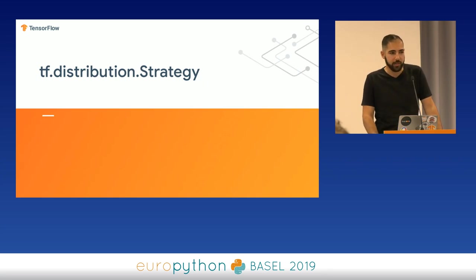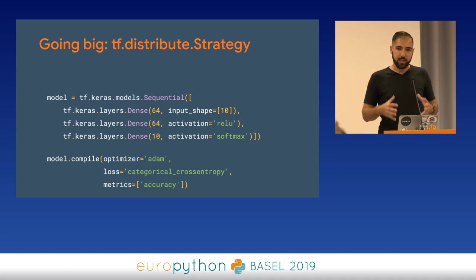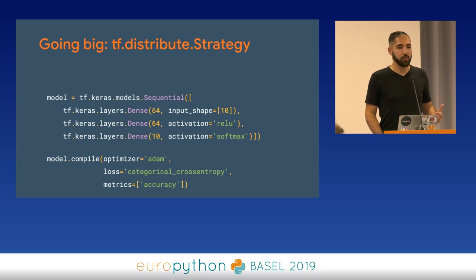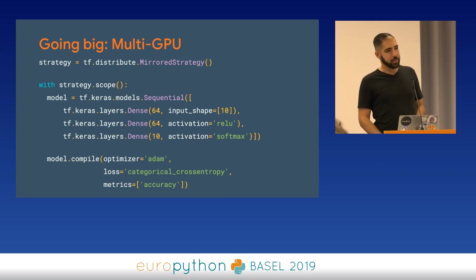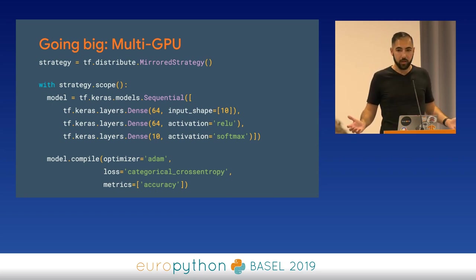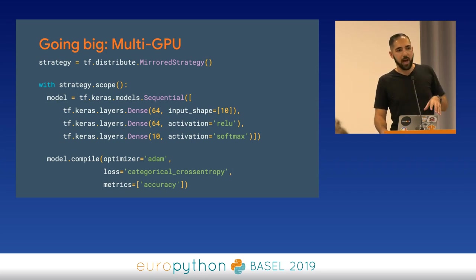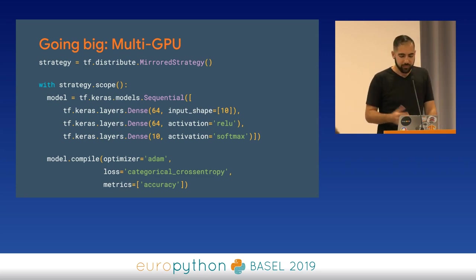Next, distribution strategies. TensorFlow is flexible and scalable across different hardware environments. If you've built a model locally and want to move it to a larger hardware cluster, all you need to do is add it within the scope of a distribution strategy. Distribution strategies let you take your code and deploy it over a hardware cluster. In this example, we're using the mirrored strategy — if you have four GPUs, it copies the same model across all of them. You can also split a large model across multiple GPUs, though that's outside the scope of this talk.